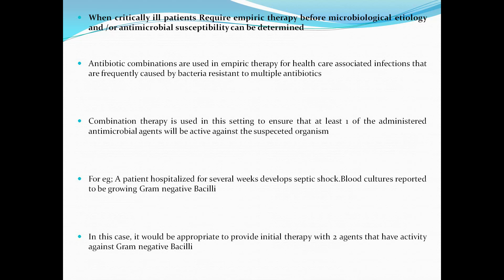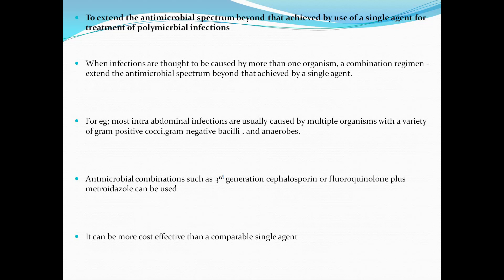When critically ill patients require empiric therapy before microbiological etiology or antimicrobial susceptibility can be determined, antibiotic combinations are used in empiric therapy for healthcare-associated infections frequently caused by bacteria resistant to multiple antibiotics. Combination therapy is used to ensure that at least one of the administered antimicrobials will be effective against the organism. For example, in a hospital-acquired patient who develops septic shock and blood cultures are reported as gram-negative bacillus, initial therapy with two agents effective against gram-negative bacilli is appropriate. Combinations can also extend the antimicrobial spectrum for polymicrobial infections such as intra-abdominal infections, which are usually caused by multiple organisms.